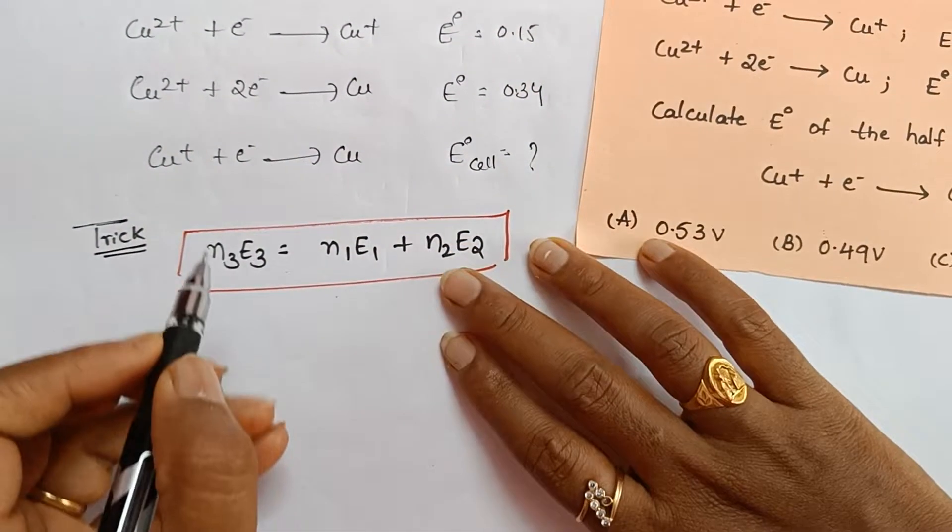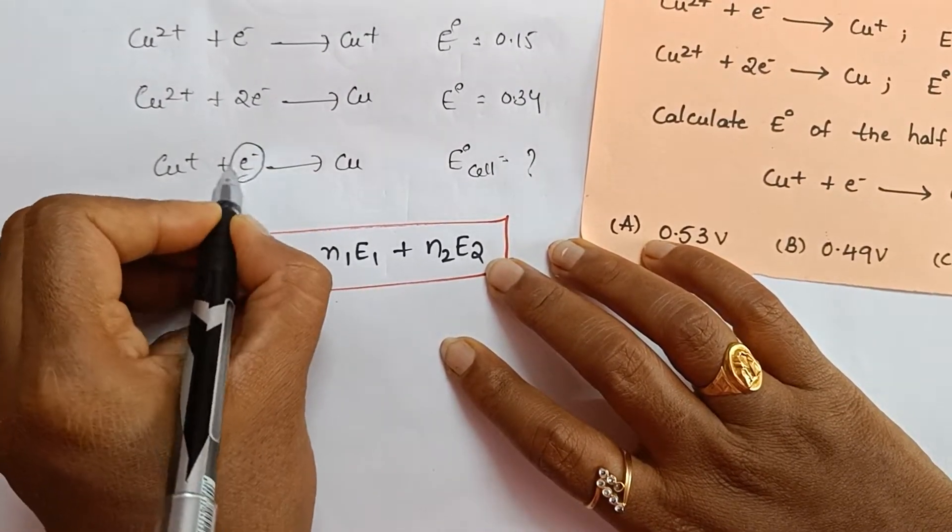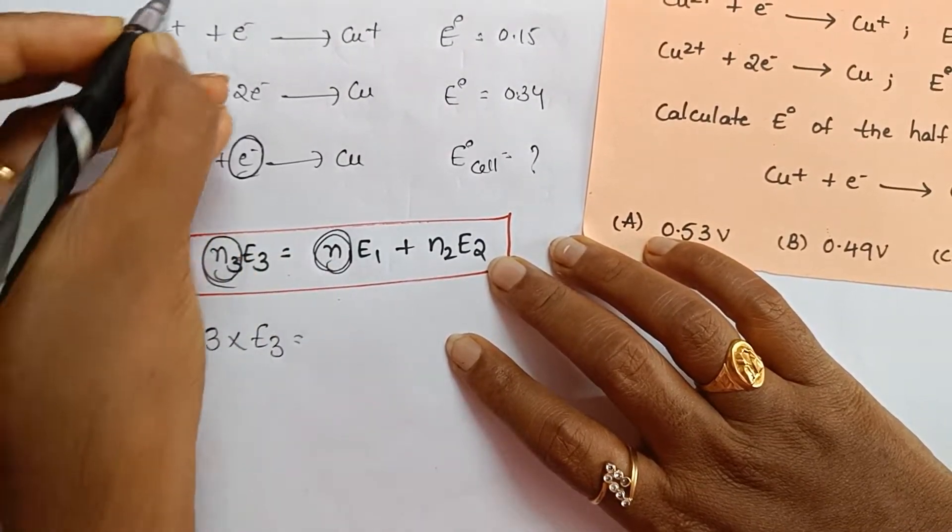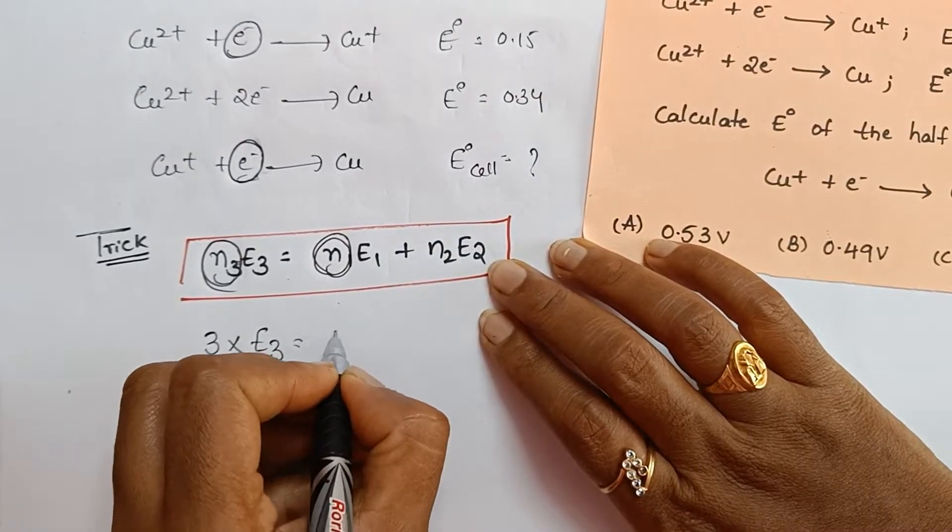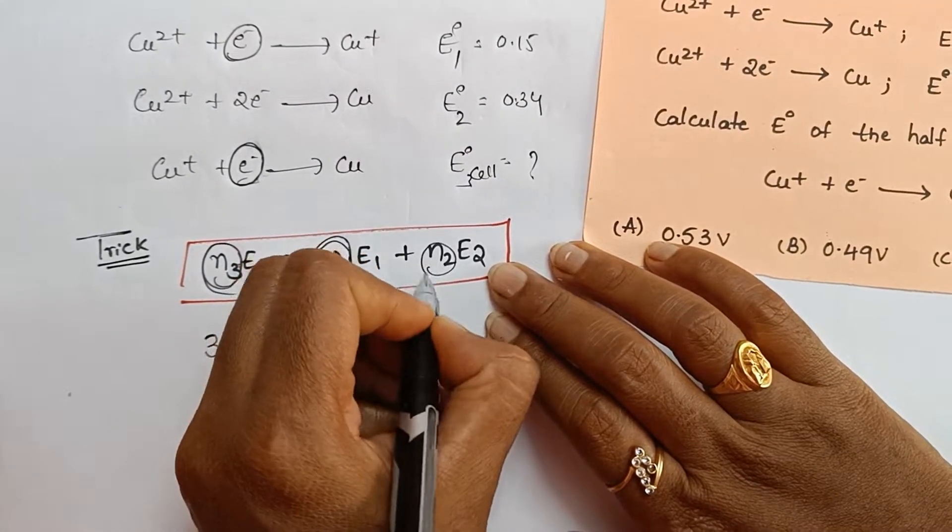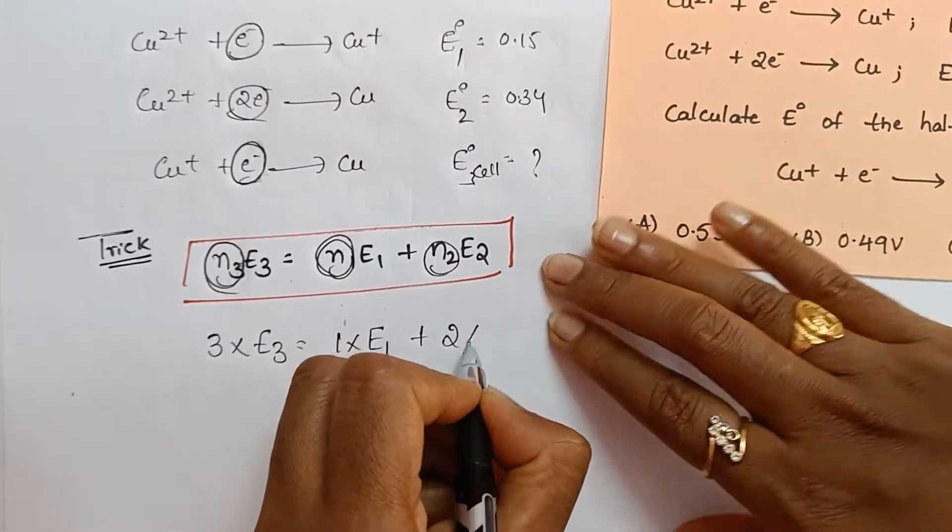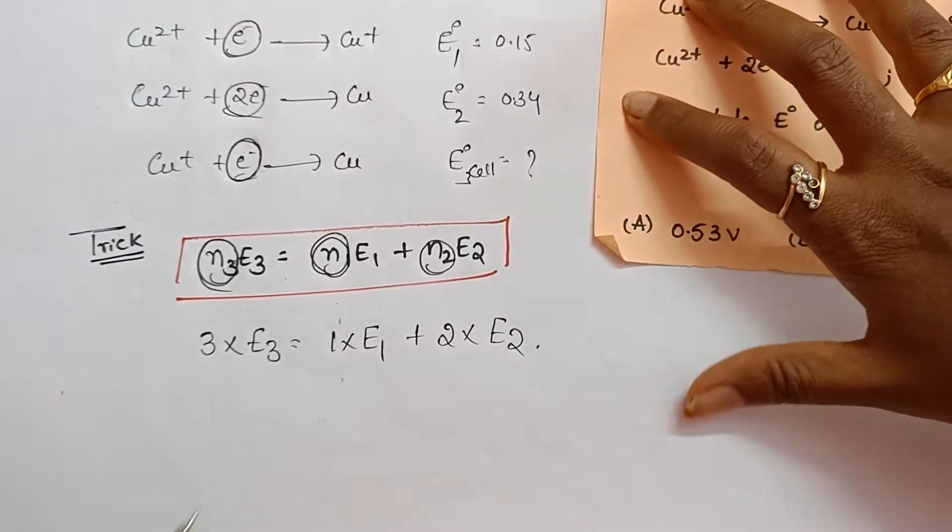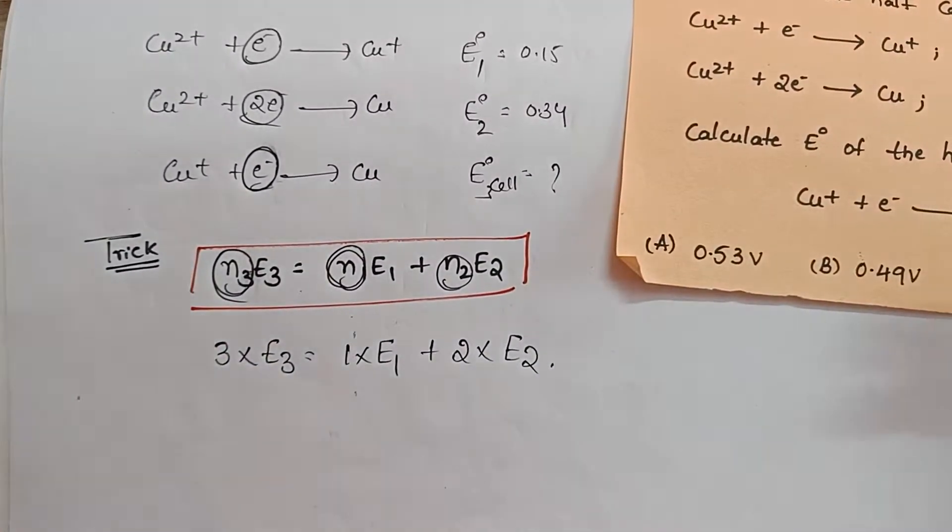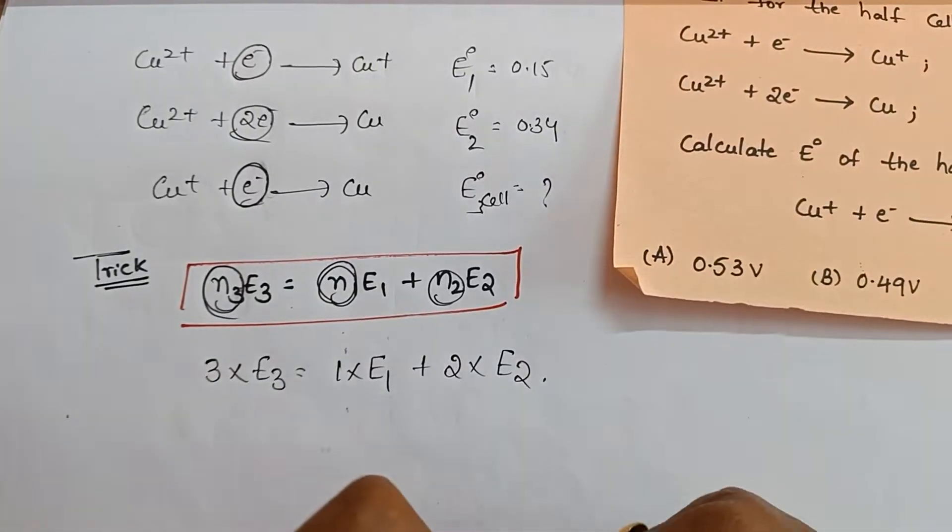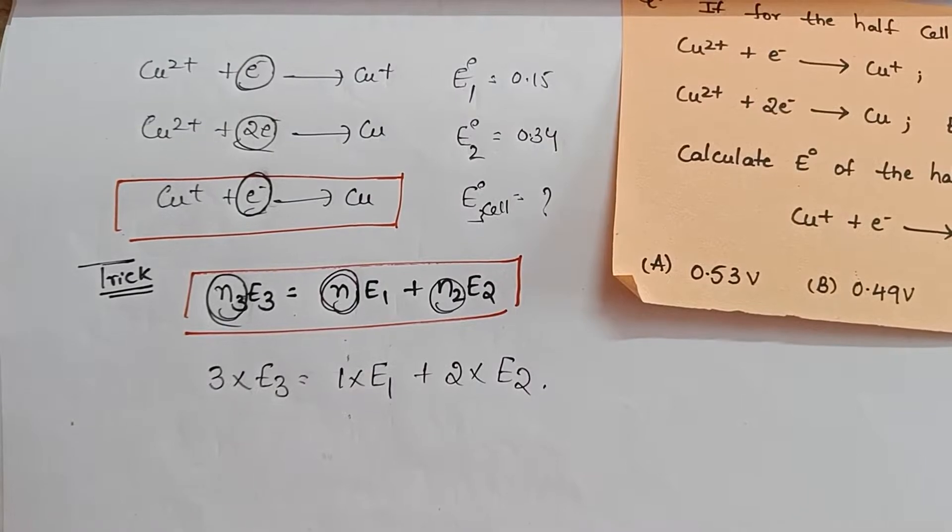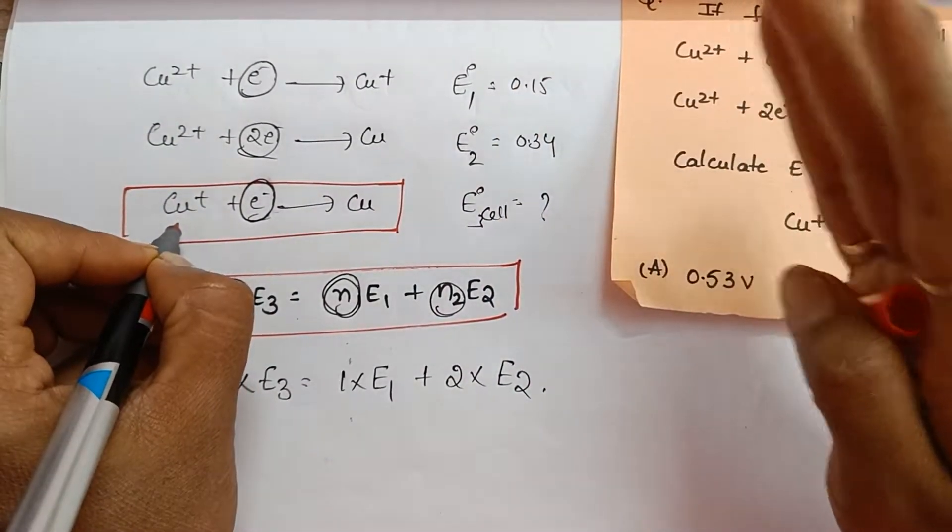So what you have to do is N3 means number of electrons changed in the third equation, that is 3 into E3. Number of electrons transferred in the first one, that is 1 into E1. E1, let's say this is E1, this E2, this E3 plus number of electrons transferred in the second equation is 2 into E2. Now you got this expression. After that, how to substitute E1 and E2?